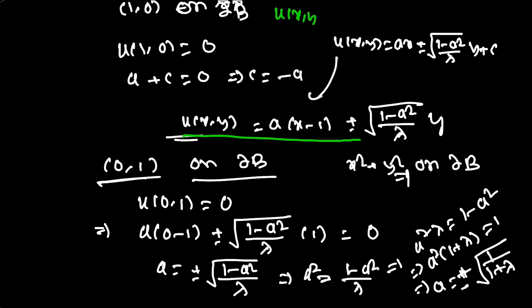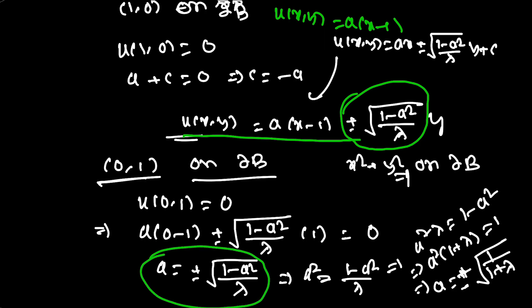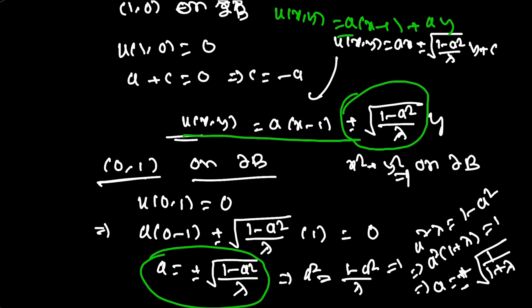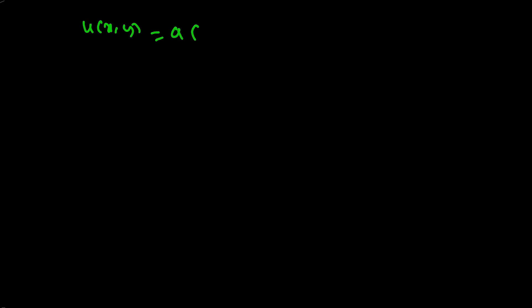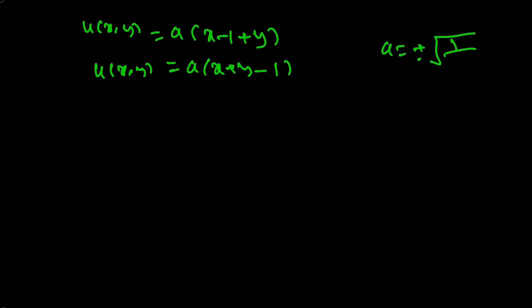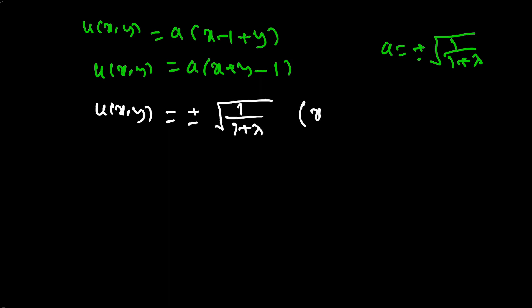So u(x,y) = a(x − 1) + a · y = a(x + y − 1), where a = ±√(1/(1 + λ)). Therefore u(x,y) = ±√(1/(1 + λ)) · (x + y − 1).